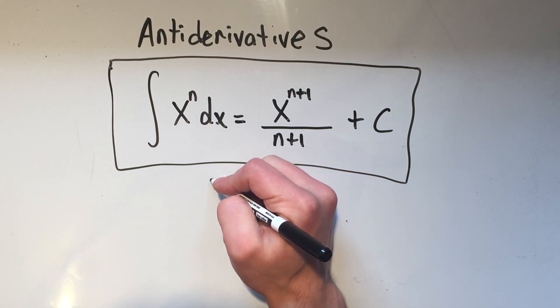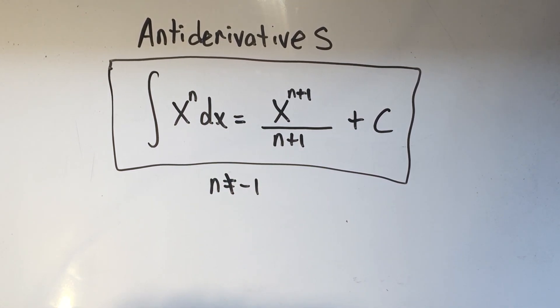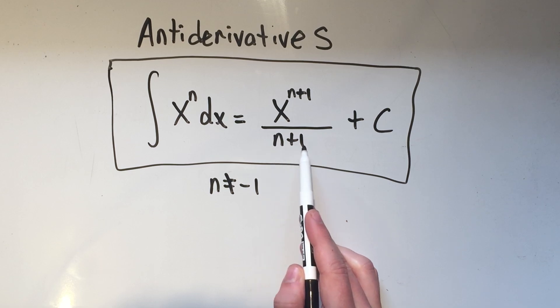So here is your anti-derivative formula. And this is provided that n does not equal negative one. We'll talk about that a little later. That's simply because if you plug negative one into this formula, you get negative one plus one, which is dividing by zero. So that's no good.